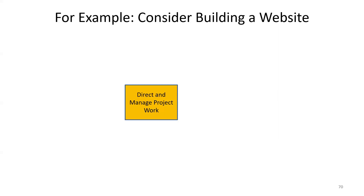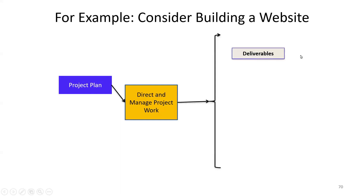What is the team trying to produce? They are trying to produce the deliverables, based on the project plan. For example, on an agile project you can have deliverables checked every sprint — after every two or three weeks, depending on the sprint duration. When checking these deliverables, we are trying to gather data.